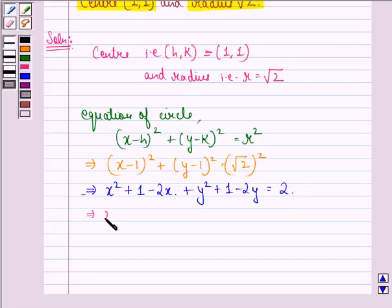This implies that x² + y² - 2x - 2y equal to 0, because 1 plus 1 gives us 2. So this 2 in the left hand side gets cancelled with this 2 in the right hand side.